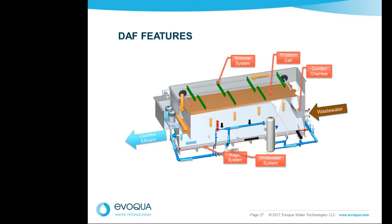Contrary to popular belief, not everything floats — lots of things will settle. So DAFs have a mechanism to handle settled material, either a hopper in the bottom with drain ports, or in this case an auger that pulls the material as it settles to the bottom toward the front end of the DAF, where it is discharged through a port and a blowdown scheme.